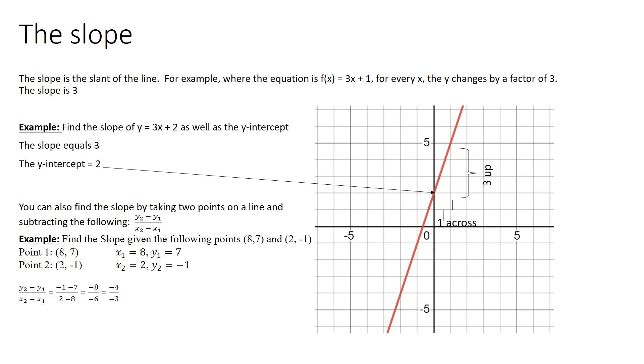But we also find a slope if we just have two points, by using this equation, y2 minus y1 over x2 minus x1. If I looked at two points, for example, I was given the points 8 comma 7 and 2 comma minus 1, point 1 is 8, 7, point 2 is 2 minus 1.